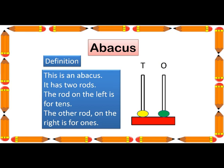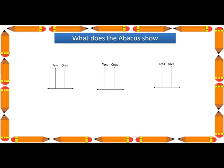We have an abacus now. This is an abacus. It has two rods — the rod on the left is for tens and the rod on the right is for ones. Now look at the first abacus. There is zero bead in the one's rod, so we have zero ones. But in the tens rod we have two beads. Two beads means two tens and zero ones. Two tens and zero ones make twenty.